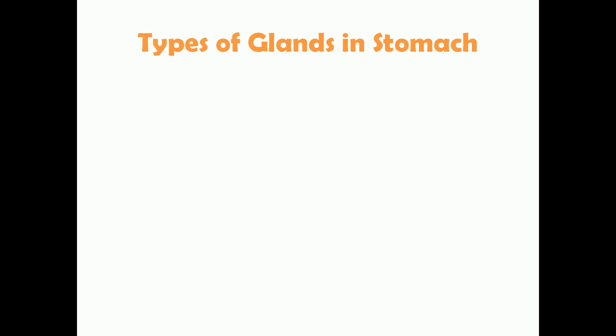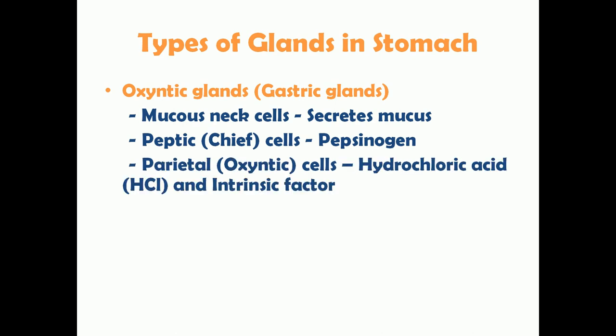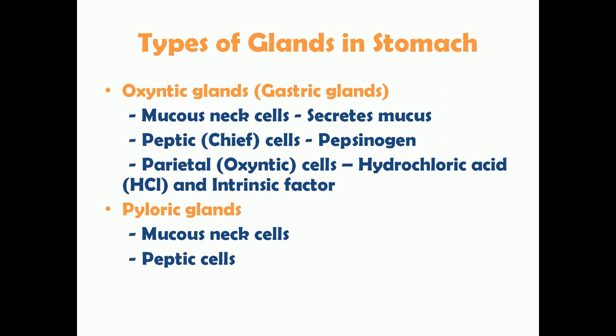There are basically two types of glands in the stomach. Oxyntic glands, also known as gastric glands, which include mucus neck cells that secrete mucus, peptic or chief cells that secrete pepsinogen, and parietal or oxyntic cells that secrete hydrochloric acid and intrinsic factor. The other type is pyloric glands, composed of mucus neck cells and peptic cells.